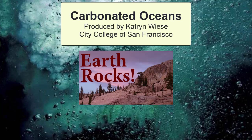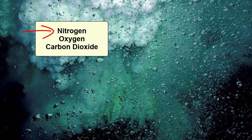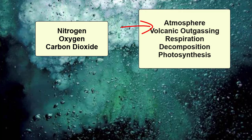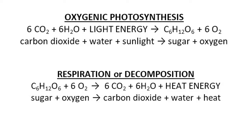What gases are present in the oceans and where do these gases come from? The top three gases dissolved in the ocean are nitrogen, oxygen, and carbon dioxide. These gases come from a number of sources including the atmosphere, volcanic outgassing primarily from underwater volcanoes, and biological processes: respiration, decomposition, and photosynthesis.